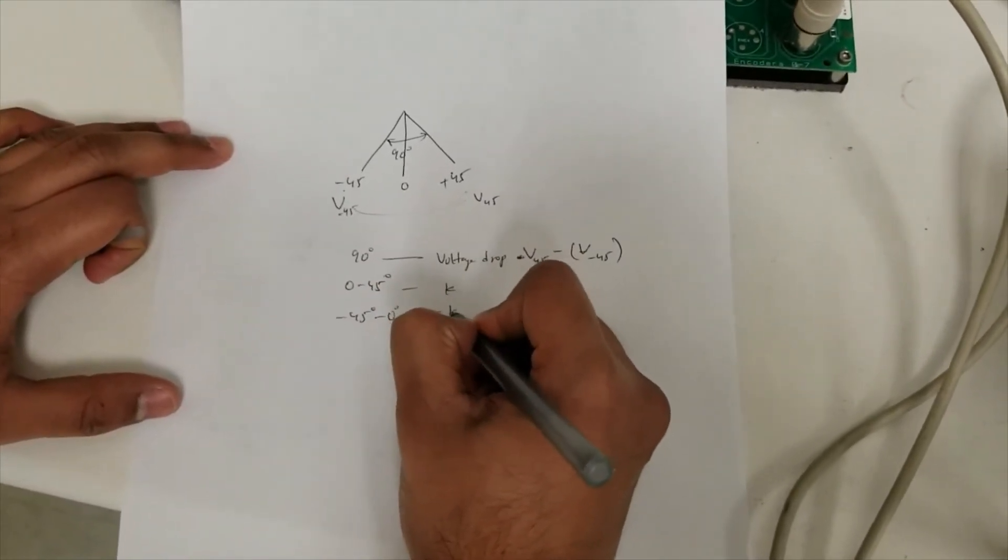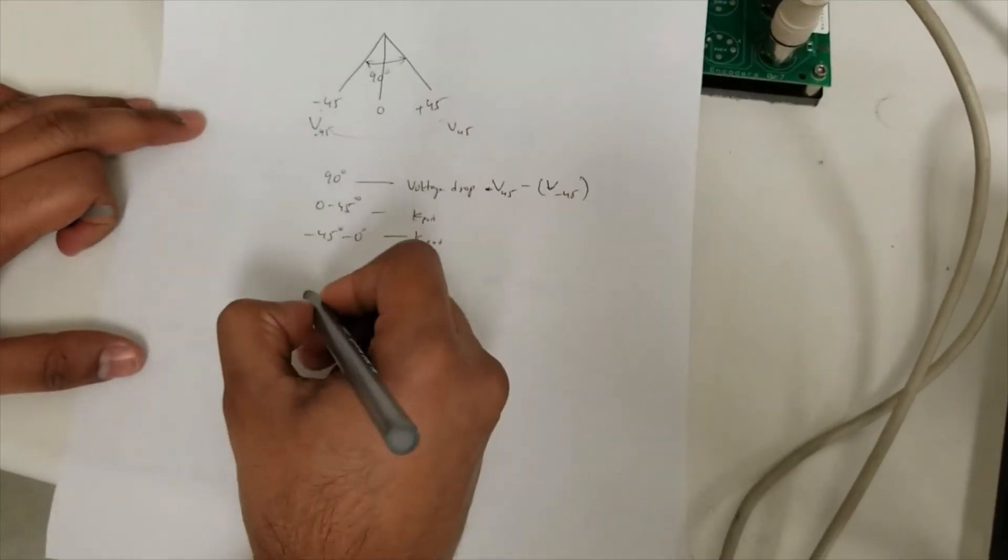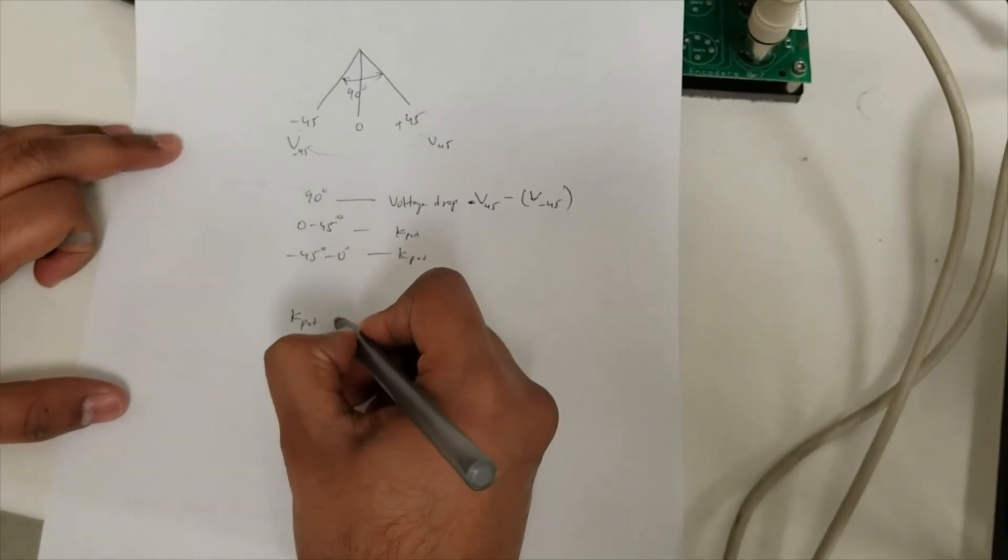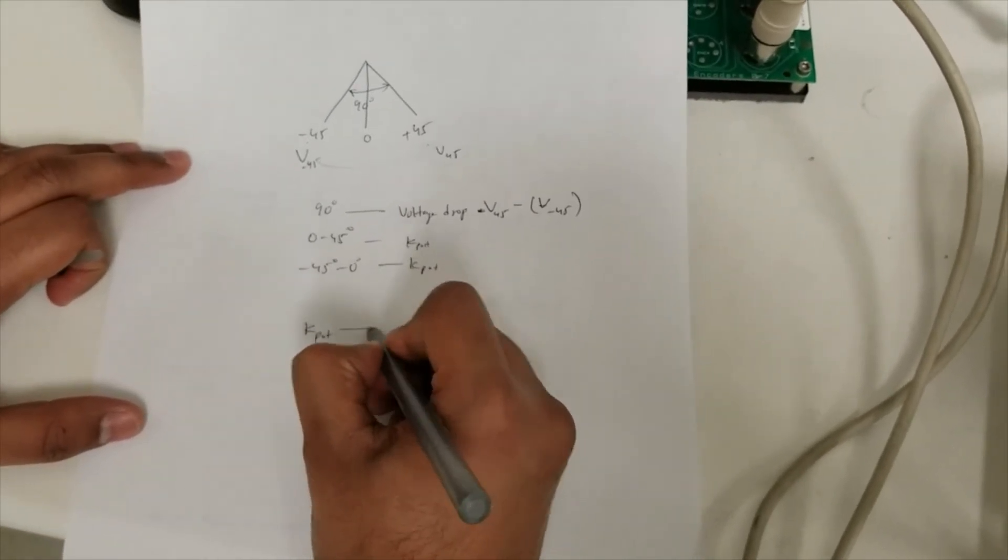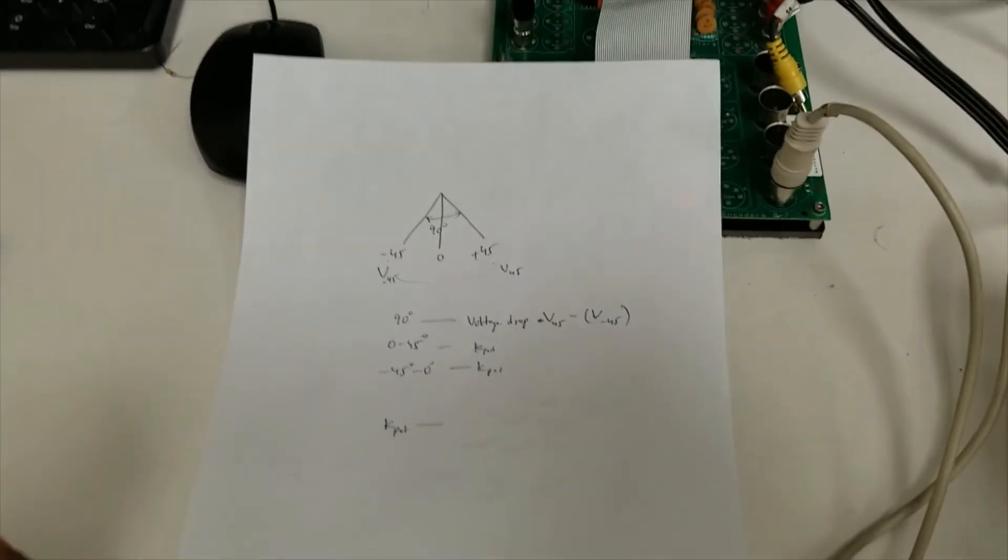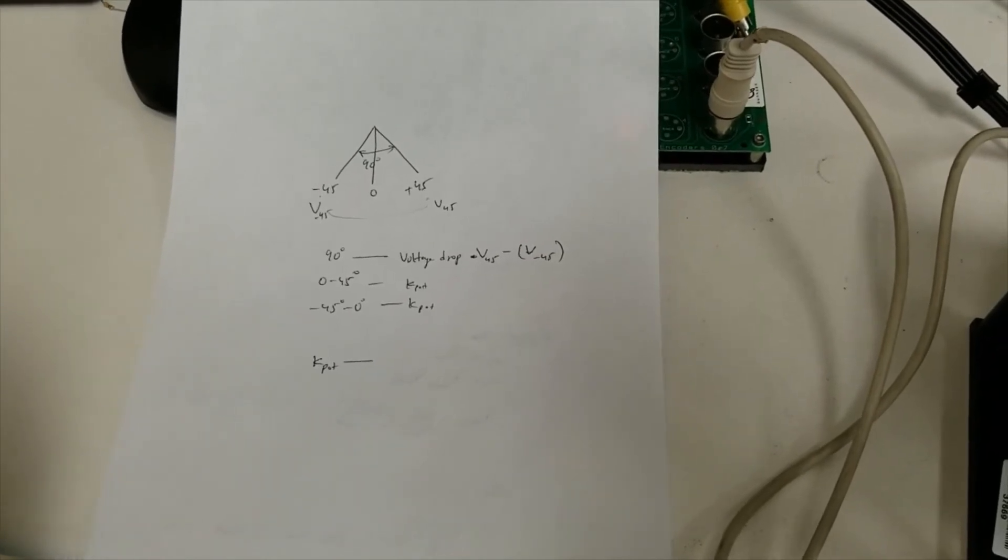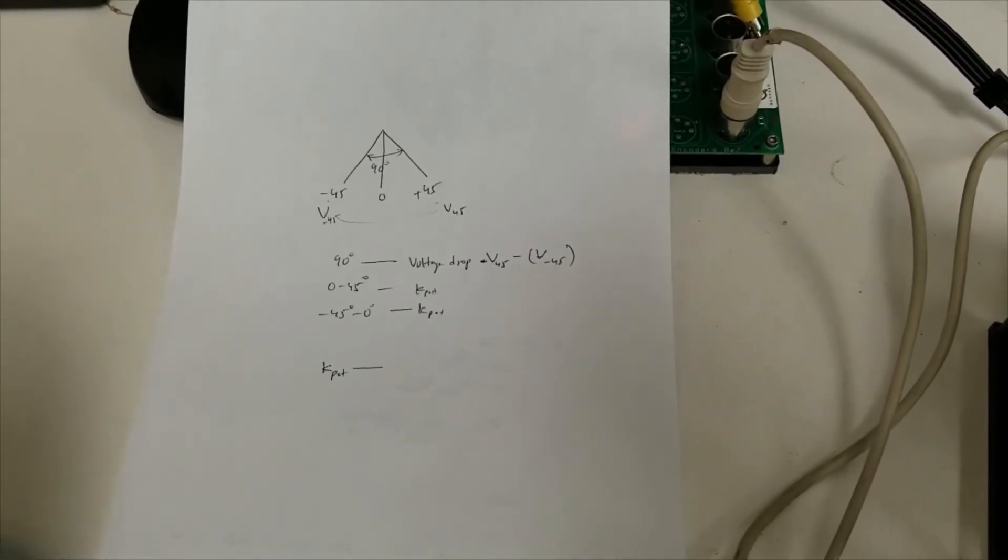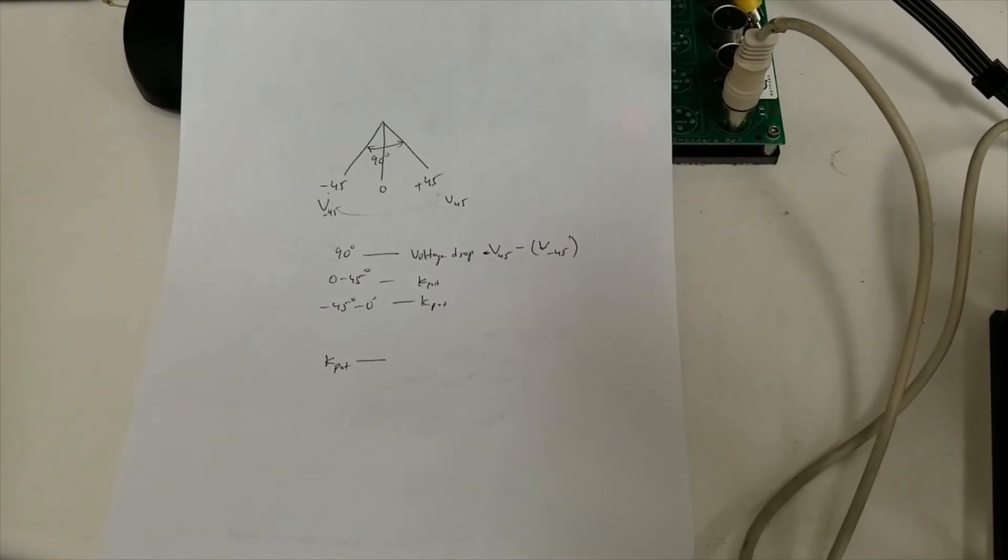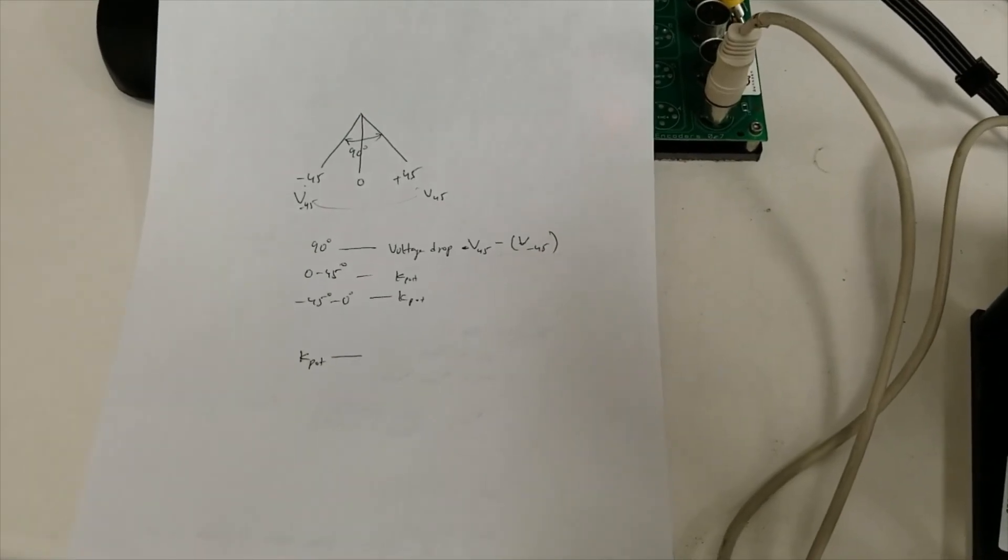You'll get three K_pots using all these, and once you take the average of all these, you can get the K potentiometer for this specific potentiometer. You can also plot all these values to get the linear trend, and the slope of it would be your K_pot.